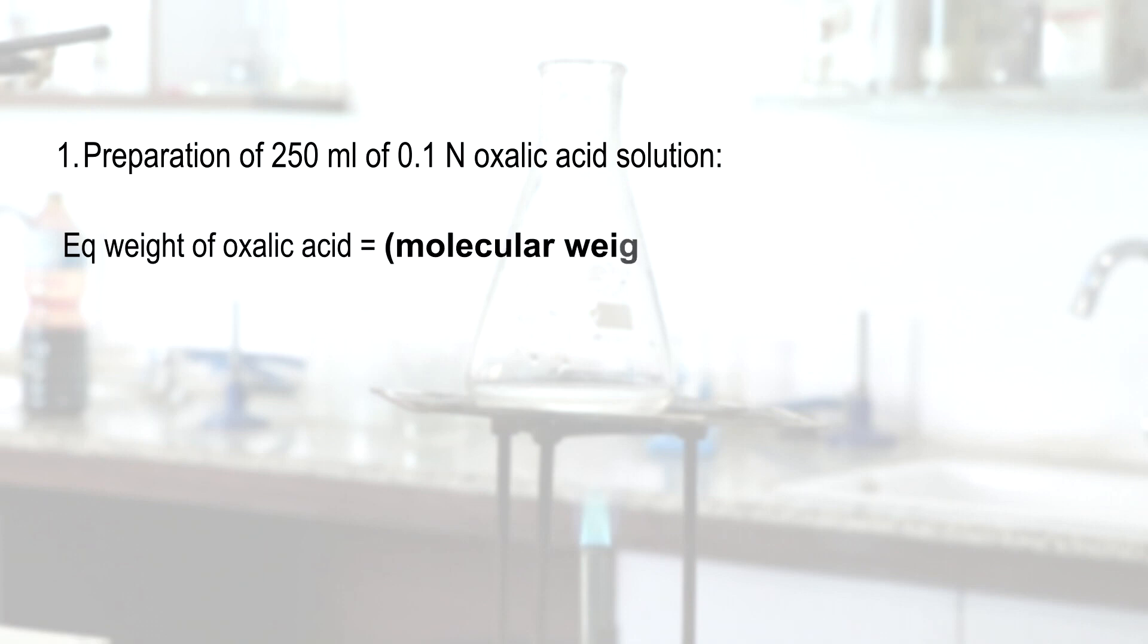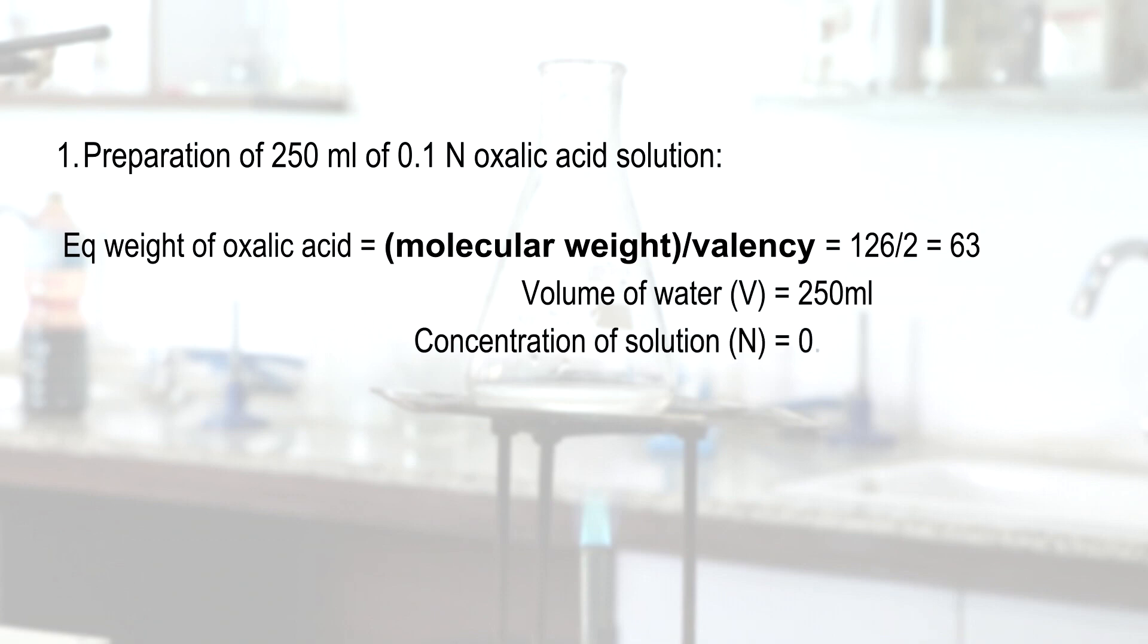Preparation of 250 ml of 0.1 normal oxalic acid solution. Equivalent weight of oxalic acid can be determined by the formula molecular weight divided by valency, which equals 126/2 = 63. The volume of water to be taken is 250 ml. Concentration of solution is 0.1 normal and the equivalent weight of acid equals 63.